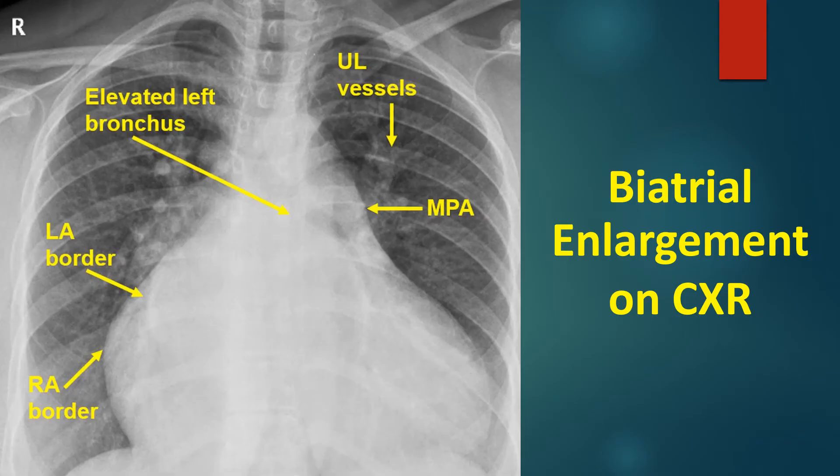Another manifestation of left atrial enlargement is elevation of the left bronchus, seen as the air bronchogram on chest X-ray. The upturned apex is suggestive of right ventricular hypertrophy, secondary to pulmonary arterial hypertension.